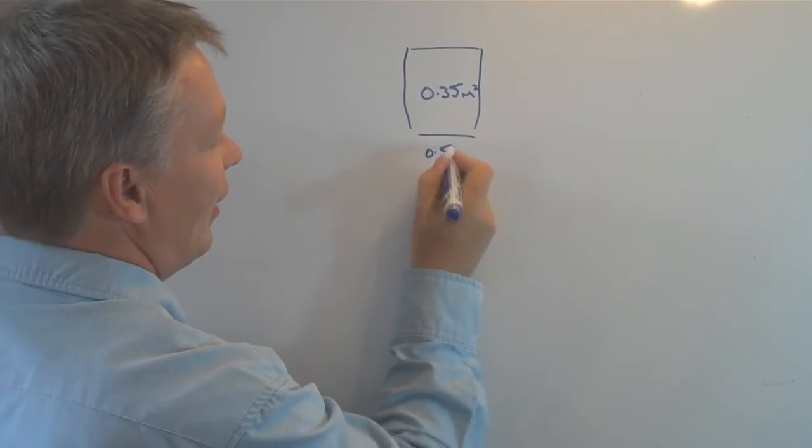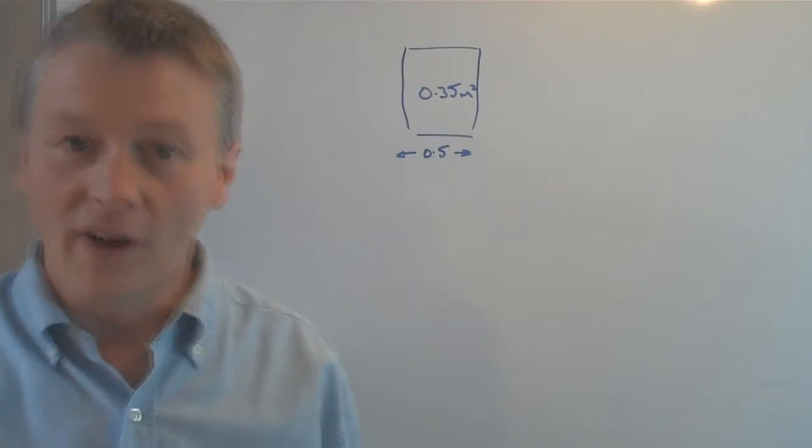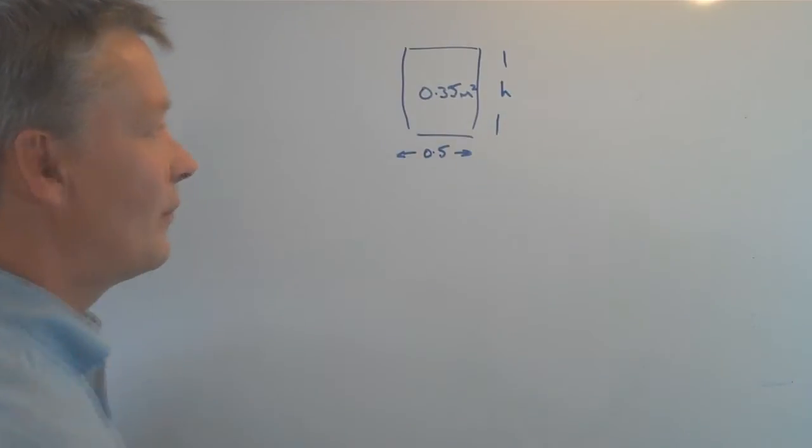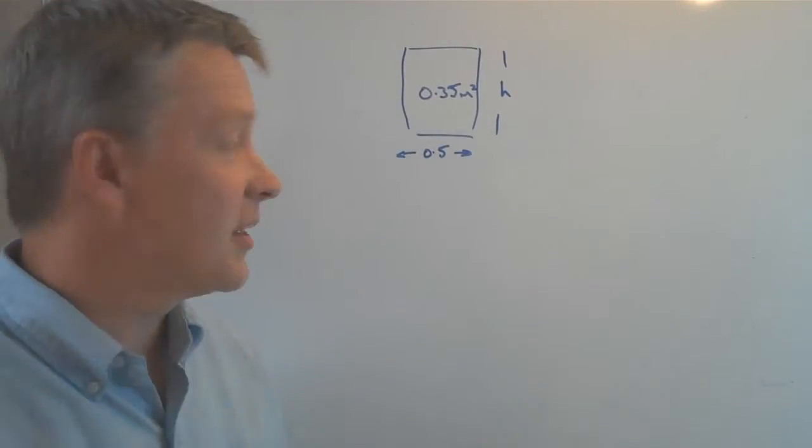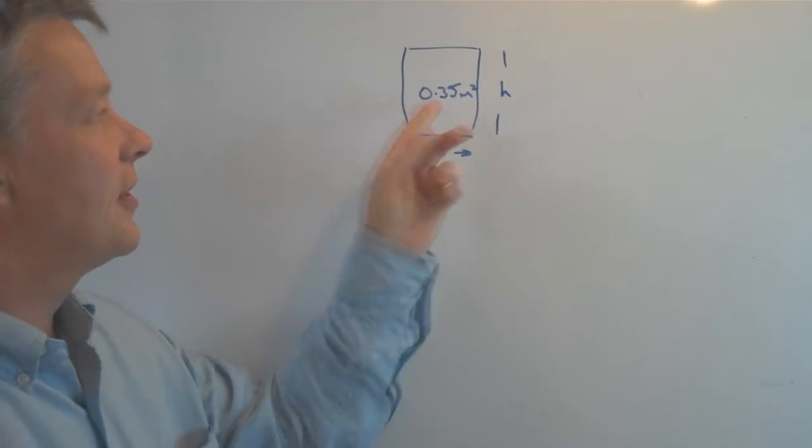What we need to do is find out the height of the rectangle. In other words, to calculate the value of the height, we have to divide 0.35 by 0.5.